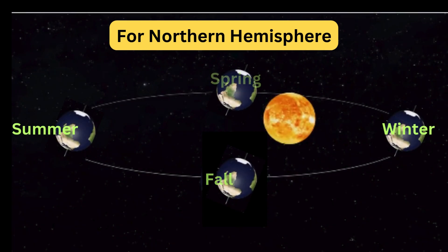Spring and fall happen when neither hemisphere is tilted directly towards or away from the sun. That's why temperatures are more mild during those seasons. Pretty cool, right?